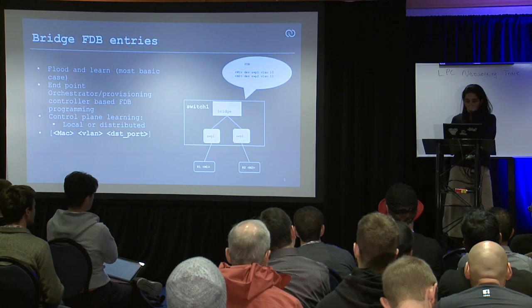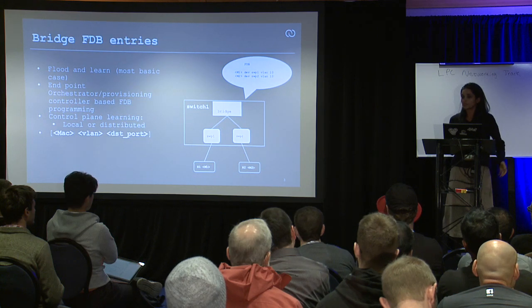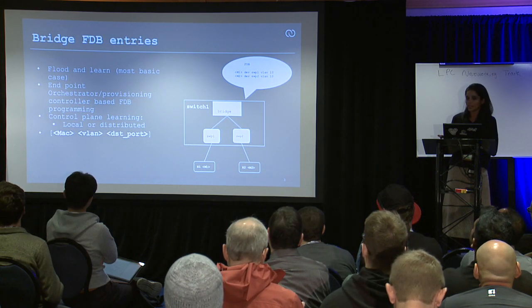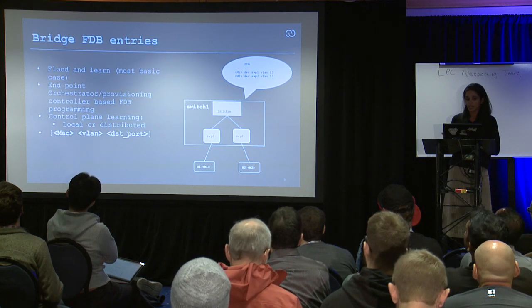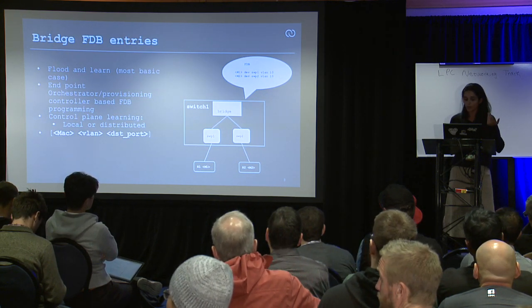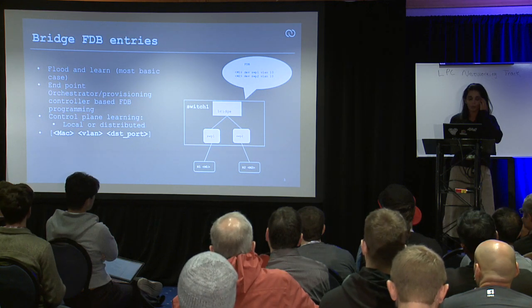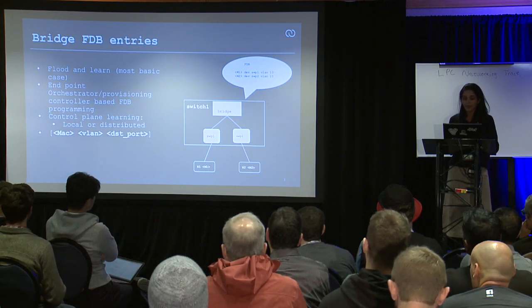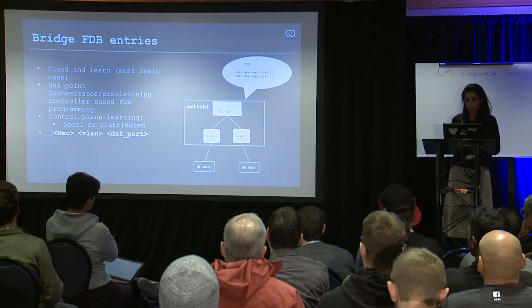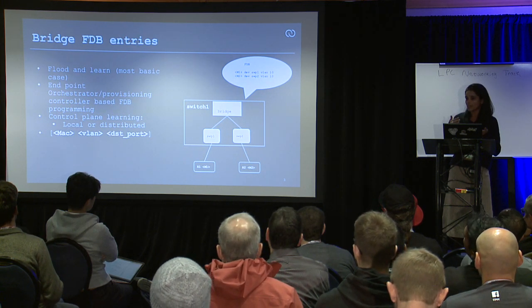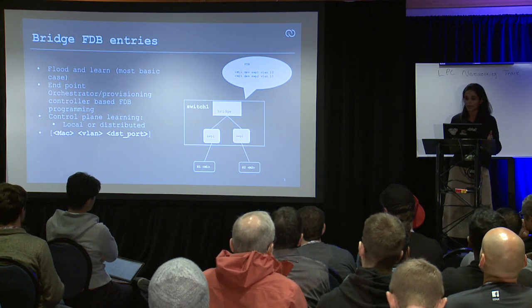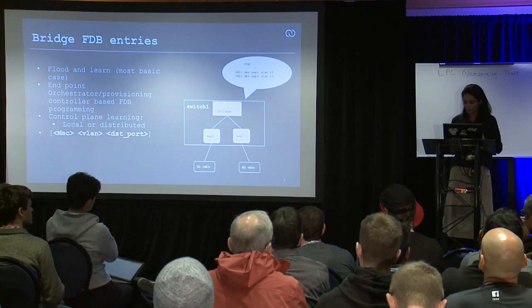A bridge FDB entry is just a forwarding entry. It's a MAC and a MAC-in-VLAN in most cases, and it points to a destination port. Similar to a FIB lookup, a bridge will look up a MAC before it forwards the frame. In the bridging case, what you want to avoid is flooding. So it's very critical that every MAC gets into the bridge at the right time.